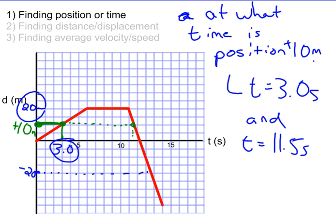So determining position or time from the other piece of information is a matter of reading exactly off the graph what the piece of information is.